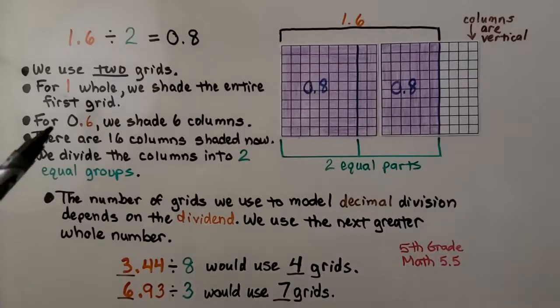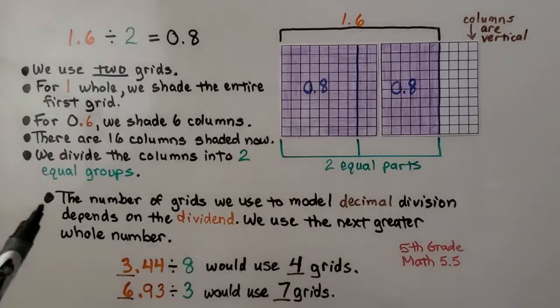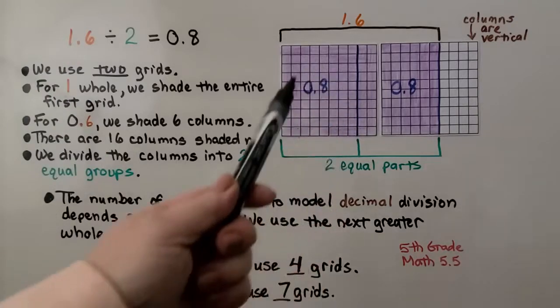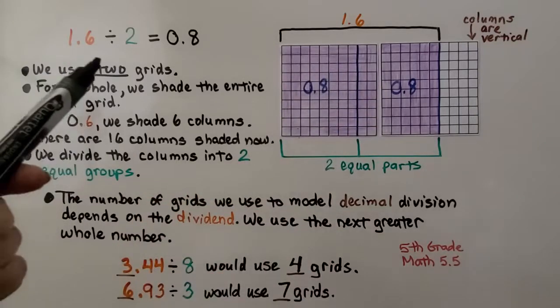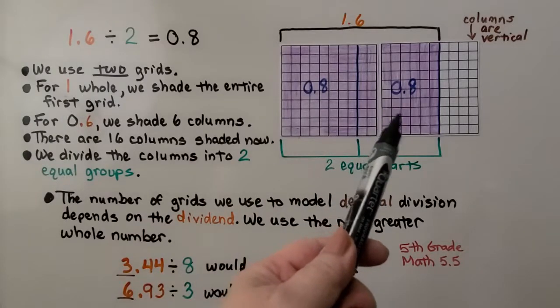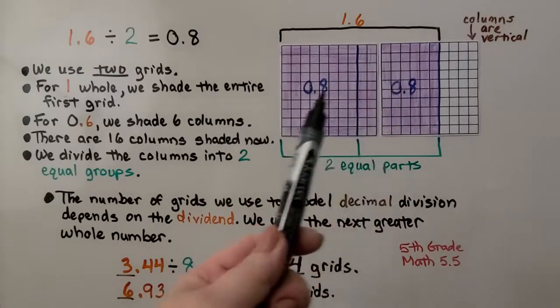Here we have 1 and 6 tenths divided by 2. We're going to use two grids. For one whole, we shade the entire first grid. Then for the 6 tenths, we shade 6 columns of the second grid. And there are 16 columns shaded now.